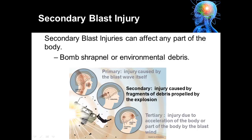Secondary blast injuries can affect any part of the body. Remember that secondary blast injuries occur when shrapnel or environmental debris gets propelled against the individual. This could result in shrapnel being embedded in the foot, leg, arm, head, torso — any part of the body. This diagram shows the primary blast injury and also the secondary blast mechanisms — the effect of missiles being propelled by the blast force, from the container the explosion was in to pieces of the environment.